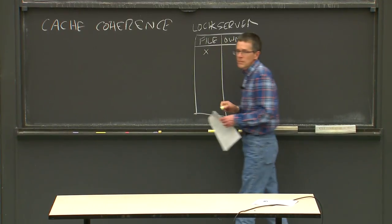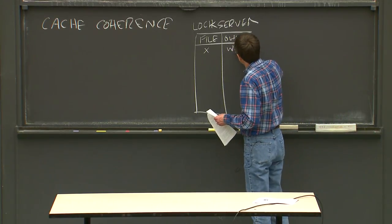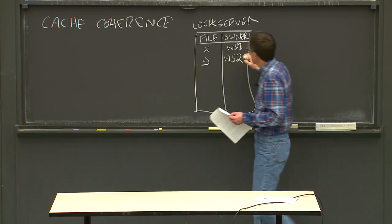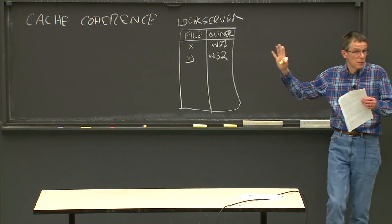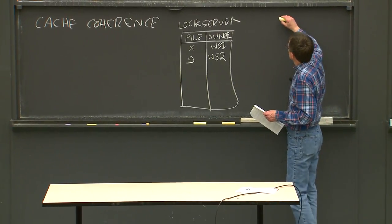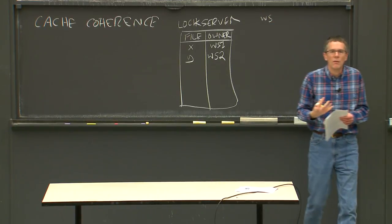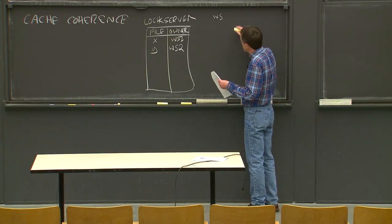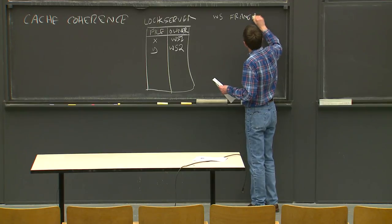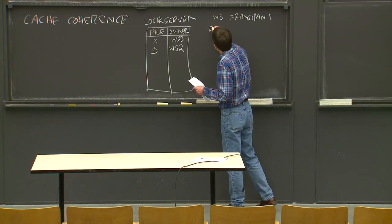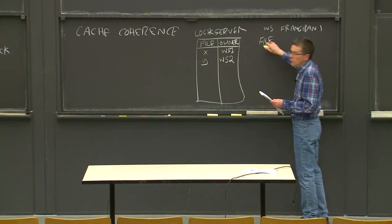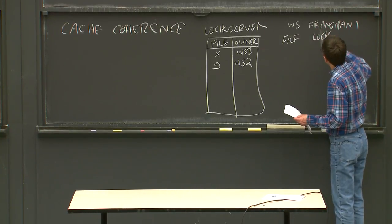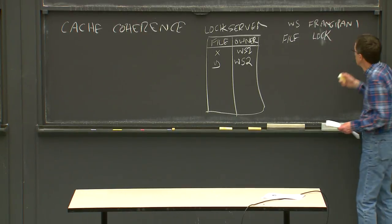For example, file X has recently been used by workstation 1, and workstation 1 has a lock on it. File Y is recently used by workstation 2, and workstation 2 has a lock on it. The lock server remembers for each file who has the lock, if anyone. In each workstation's Frangipani module, there's also a lock table that records what file the workstation has a lock for, what kind of lock, and the cached contents of that file — which might be data blocks or directory contents.